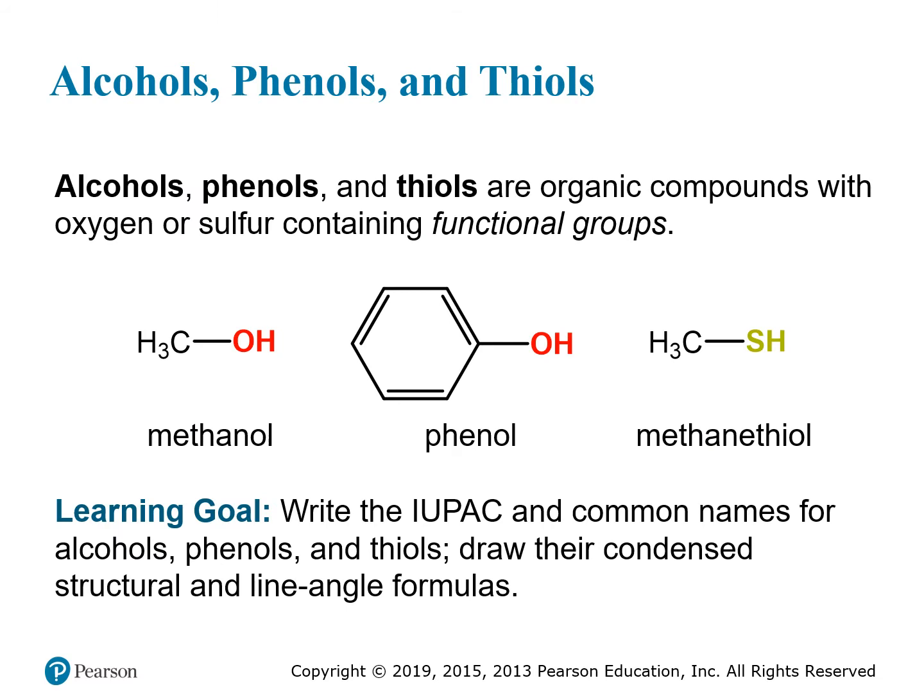Alcohols, phenols, and thiols are organic compounds with oxygen or sulfur-containing functional groups. As with alkenes and alkynes, when we have one of these functional groups in the molecule, the ending of the name changes. In this section, we're going to learn how to write the IUPAC names for these substances, as well as the structures for them.